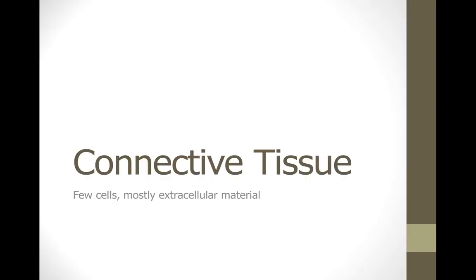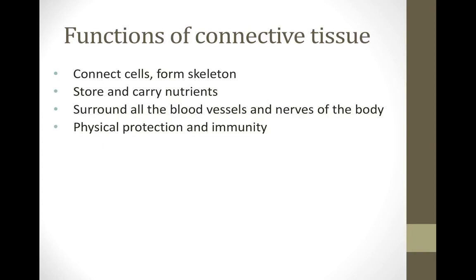Today we are going to talk about connective tissue, which is one of the four types of tissue you can find in the body. The functions of connective tissue — as the name implies — include connecting cells, helping form your skeleton, which means bone is a type of connective tissue, and storing and carrying nutrients. Fat is a type of connective tissue for storage, and blood is also a connective tissue for carrying nutrients.